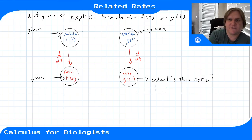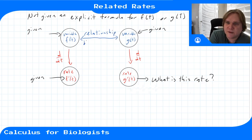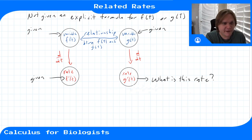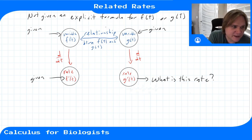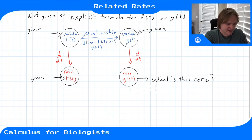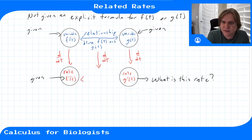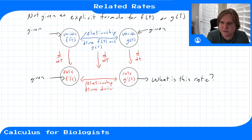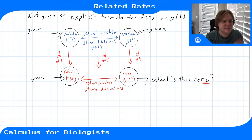Instead, what you have to do is find a relationship between f and g — an equation with f and g that probably doesn't have time in it explicitly, only implicitly through the fact that f and g are functions of time. This relationship could come from geometry, physics, biology, or given information. Then if you take the derivative of this relationship with respect to time, usually using the chain rule, you'll end up with a relationship between the derivatives.